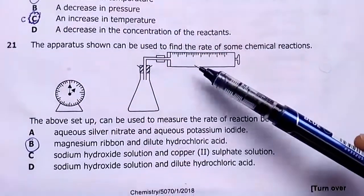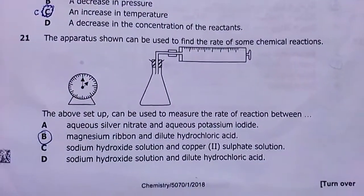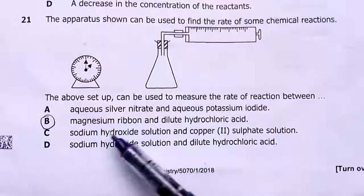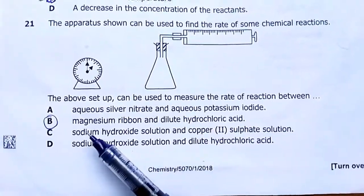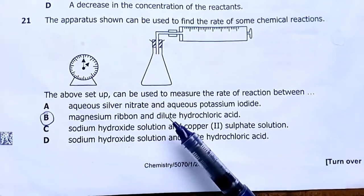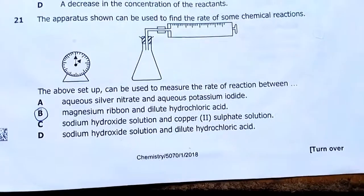Number twenty-one: the apparatus shown includes a syringe, meaning a gas is involved. The only reaction that produces a gas is B — magnesium reacting with acid to give magnesium chloride and hydrogen gas. My answer is B.